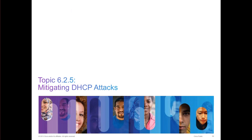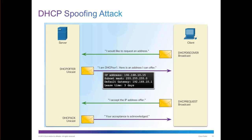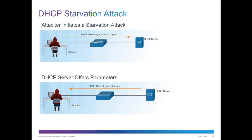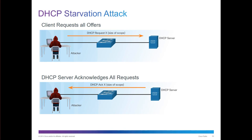Mitigating DHCP attacks: a DHCP spoofing attack exploits the traditional DHCP discover, offer, request, and acknowledgement process. There's also a starvation attack, where the attacker initiates a flood of DHCP discovers — X being the size of the scope — essentially forcing the DHCP server to run out of addresses. The attacker sends requests and the server responds with all acknowledgements, and the end result is the DHCP server has no more addresses to issue.